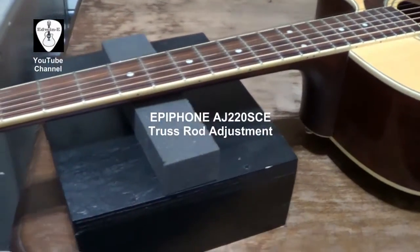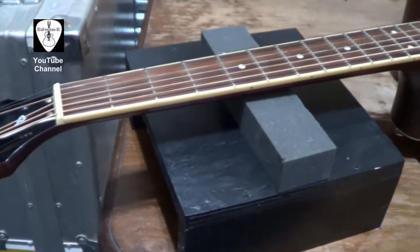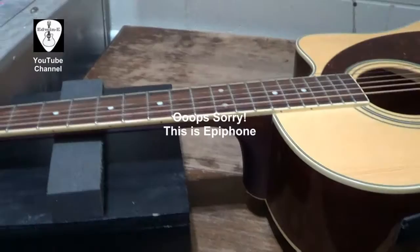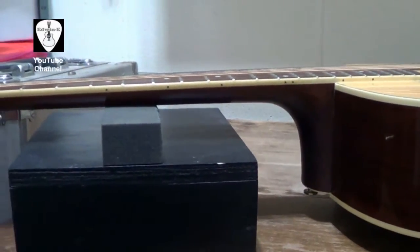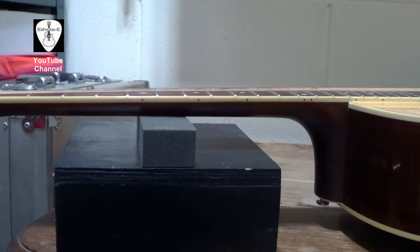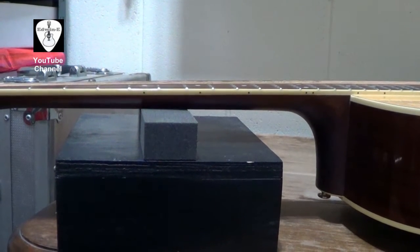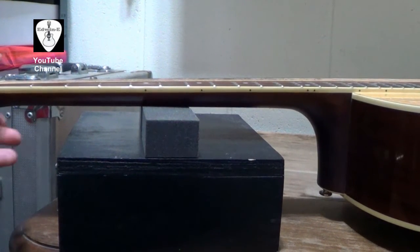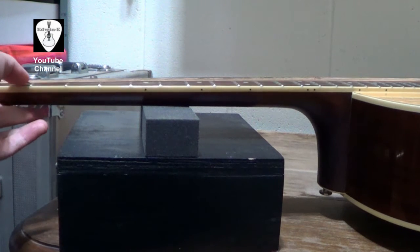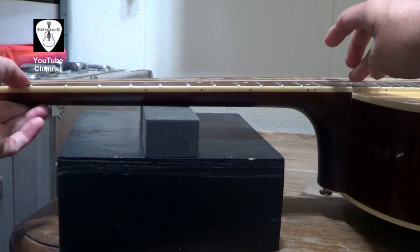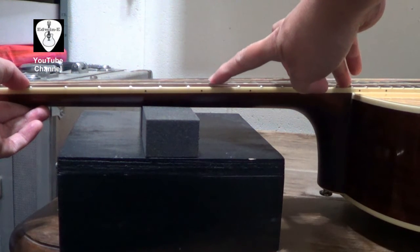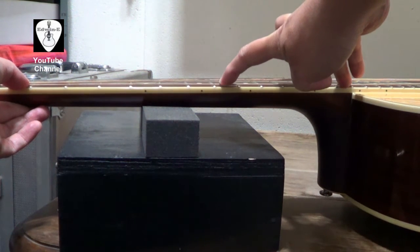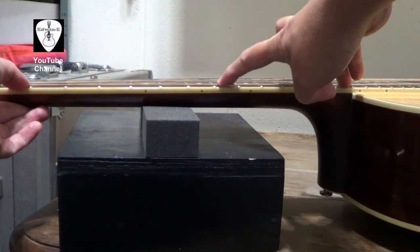Hi there, today I will be adjusting the truss rod of this Takamine acoustic electric guitar. First, I want to see the neck relief. You can do that by pressing on the first fret and also on the 14th fret, then see the deflection of the string. I can see there's a big gap on the seventh fret between the string and the fret. In that case, the string is bowed that way, so I need to